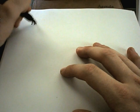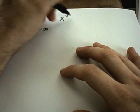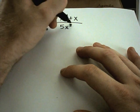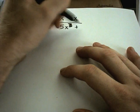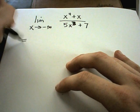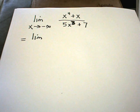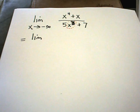Let's do one more of these. Let's look at the limit as x goes to negative infinity of x to the 4th plus x over 5x to the 3rd plus 7. Again, I'm picking on x to the 3rd. Same idea — I pick out the highest power of x in the denominator, and again I've got x to the 3rd as my highest power.